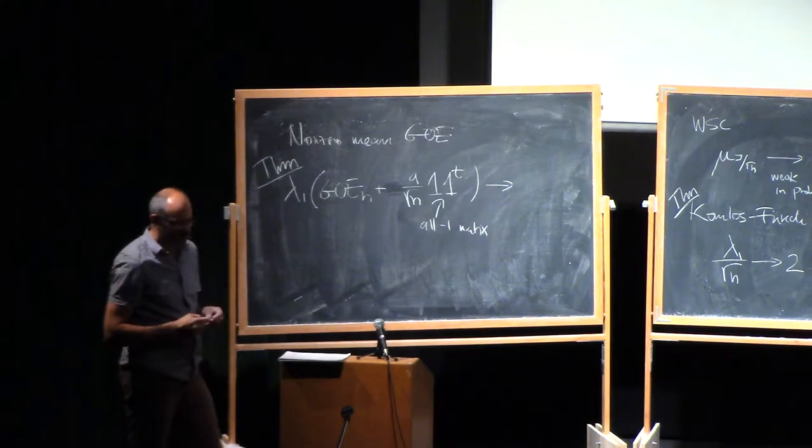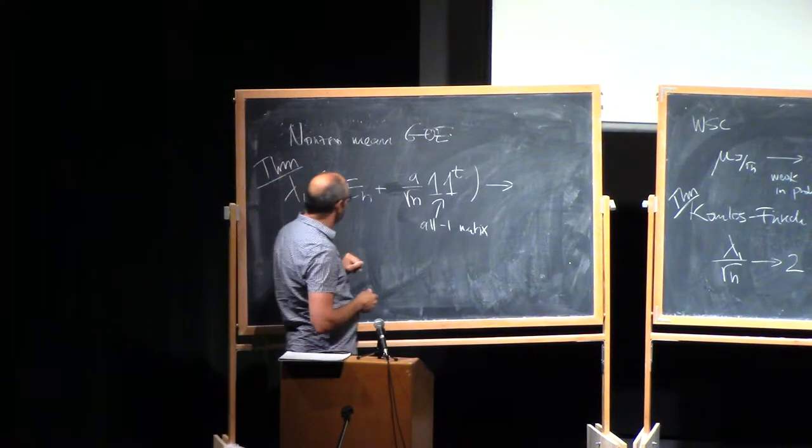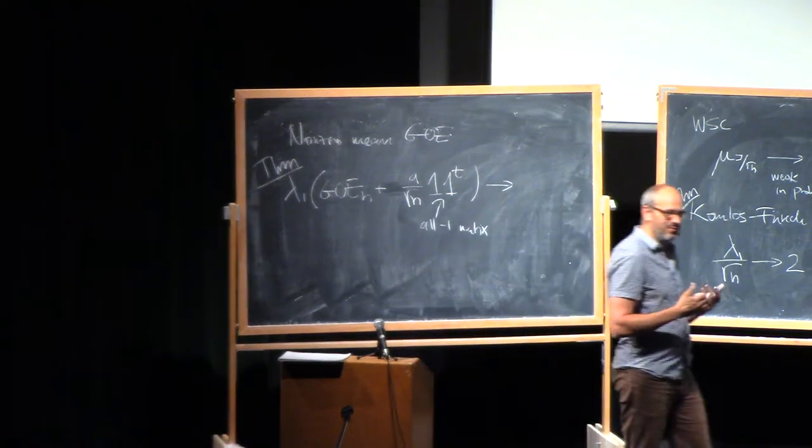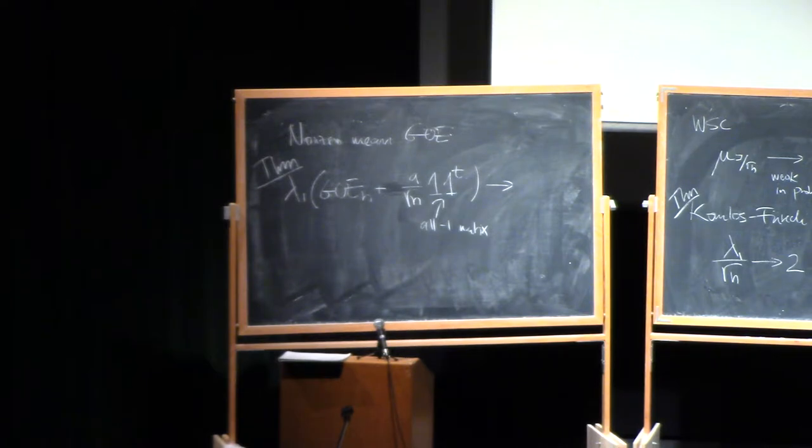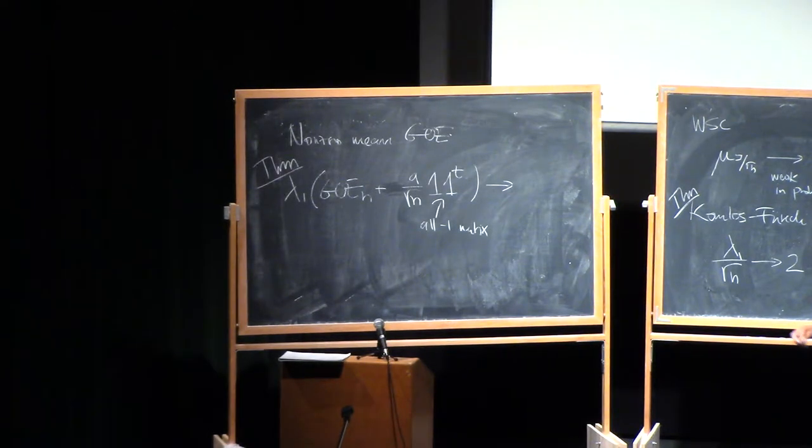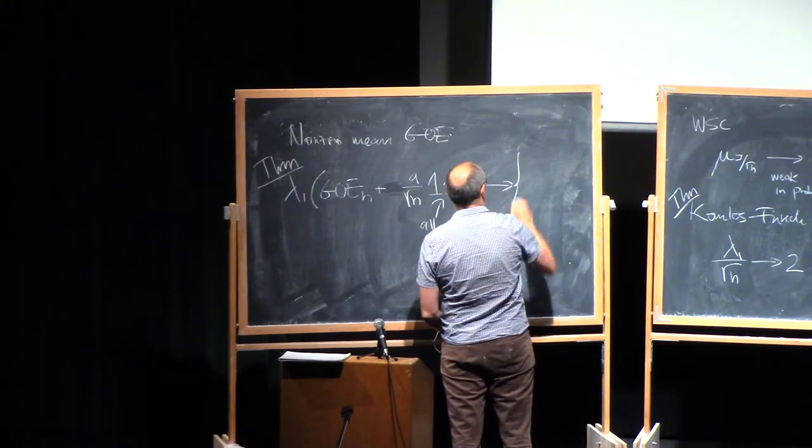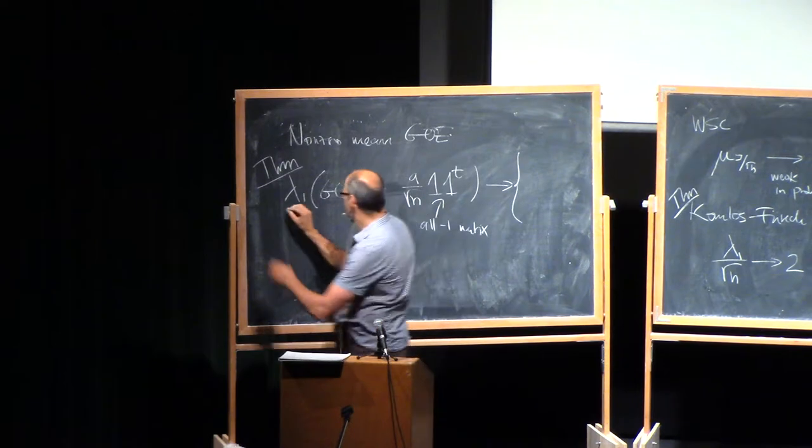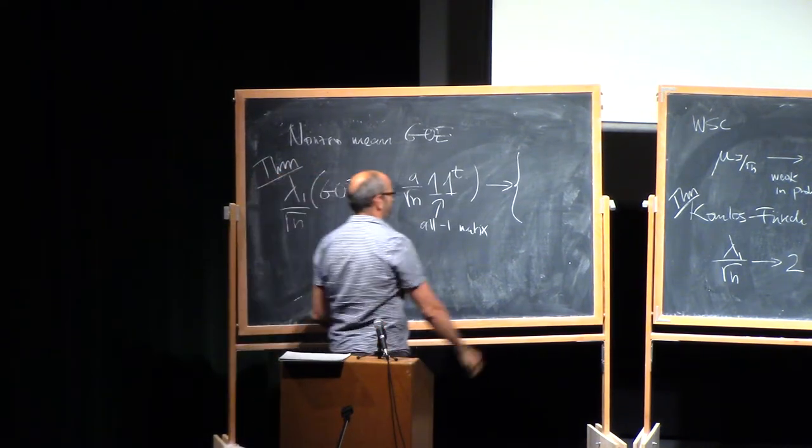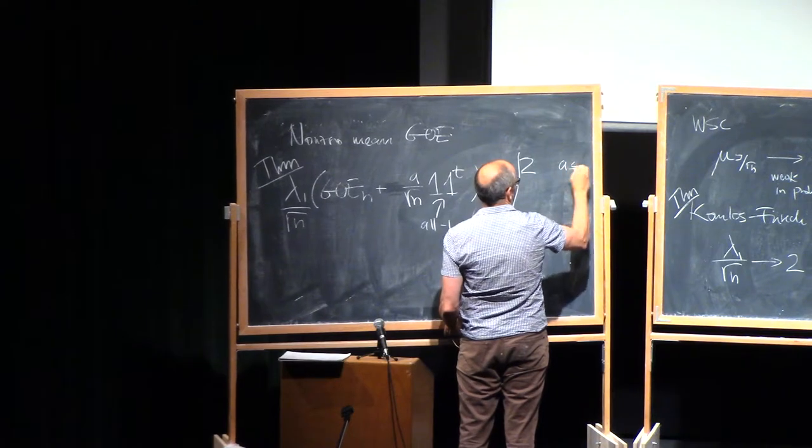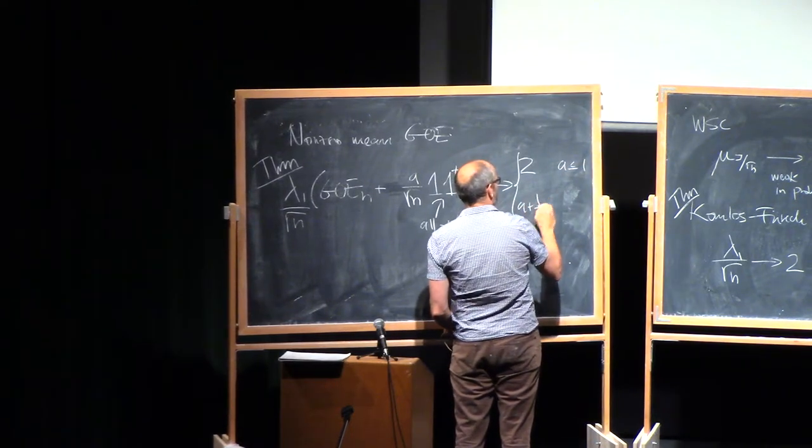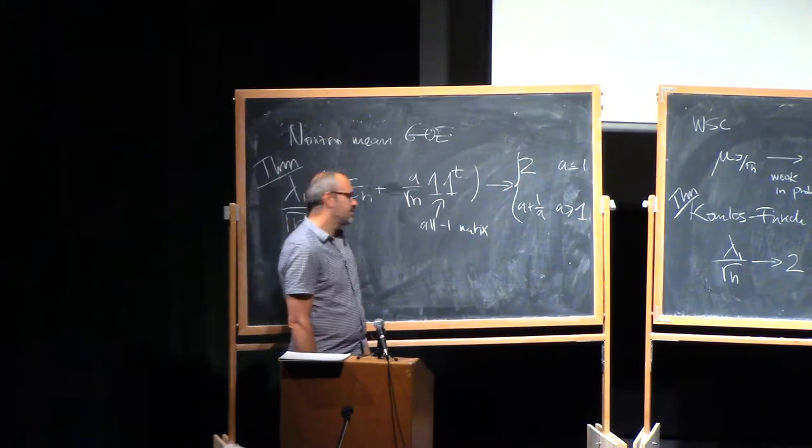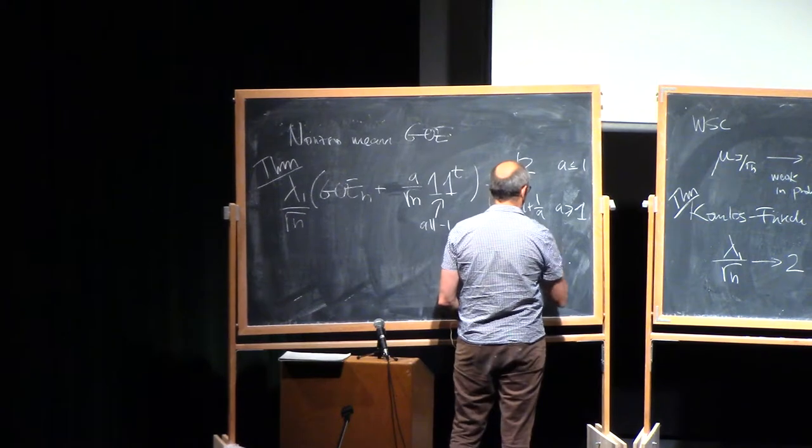So in some sense, if you first look at it, it's surprising because, you know, you take a GOE and you increase the mean of those normals by a tiny amount, just 1 over root n. And already you see a change. And the answer is that this lambda 1, if you divide by root n, because that's the typical thing, it's going to be 2 if A is less than or equal to 1 and A plus 1 over A if A is greater than or equal to 1. So it's just the same function over there. Phi of A.